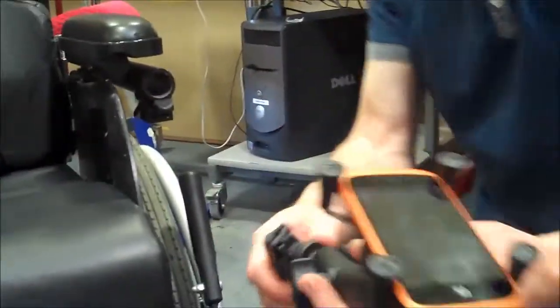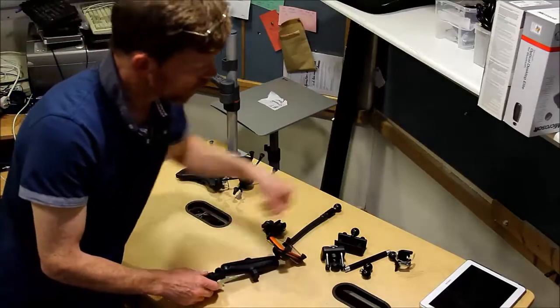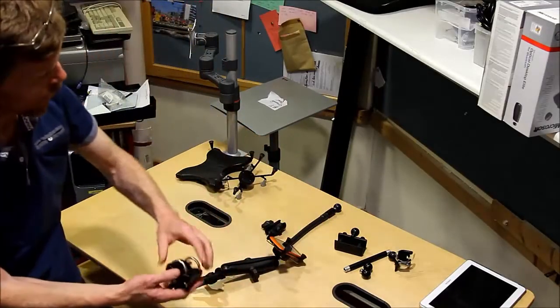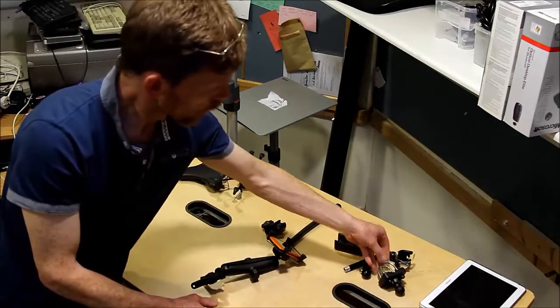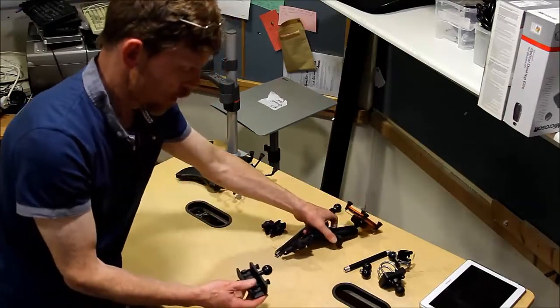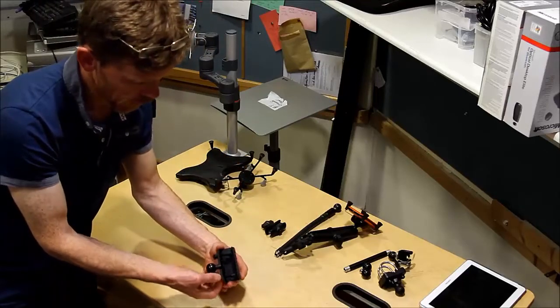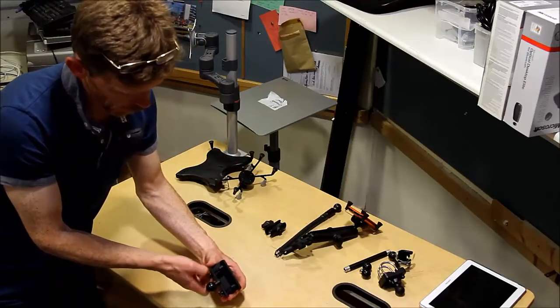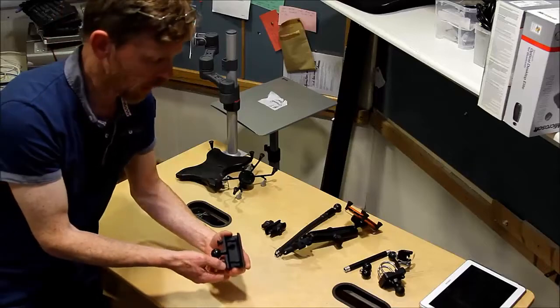So then it's easy to release in this case, but if you need something stronger, more solid onto the chair, we might use the U bolt instead. Or if the user had a tray on their chair, they could use the likes of this here clamp as well, which would clamp onto a flat surface.